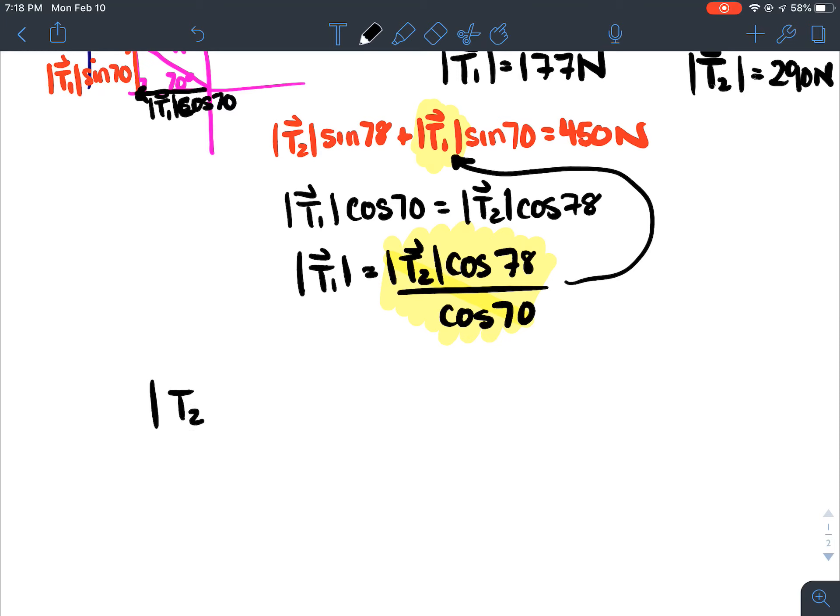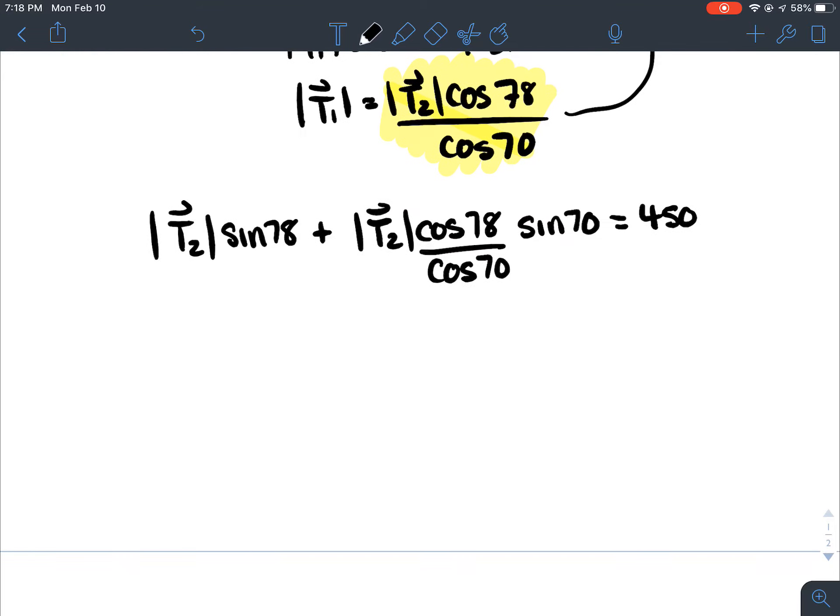So, wherever I see a T1 here, I can actually sub this into here. And then that will just give me one unknown. So, then I'll actually have T2 sin 78 plus this whole junk. So, T2 cos 78 over cos 70 sin 70 equals 450.